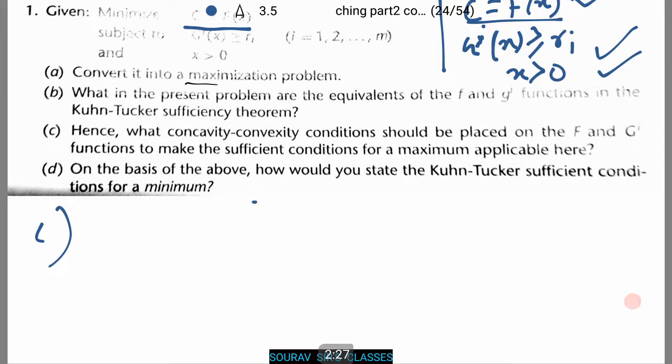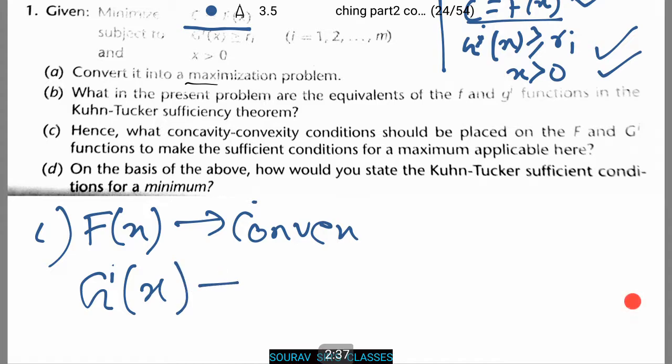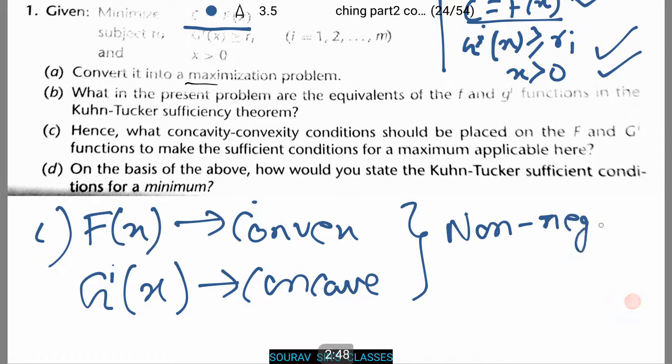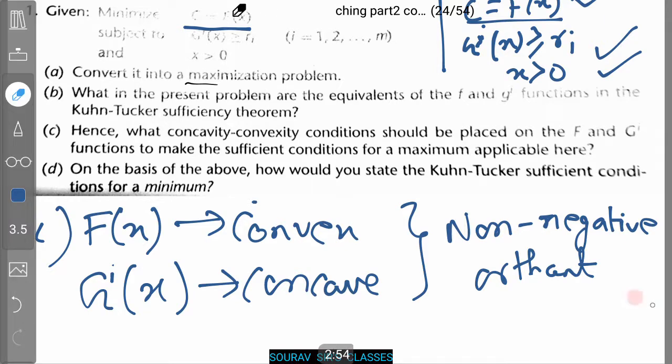In this case, the answer will be that fx should be convex and g to power ix should be concave such that they both are in the non-negative g to power ix.